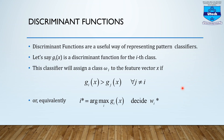Another function is the discriminant function. Discriminant functions are a useful way of representing pattern classifiers. Let's say g_i(x) is a discriminant function for the i-th class. This classifier will assign class W_i to a feature vector x if g_i(x) is greater than g_j(x) for all j not equal to i. Equivalently, this value is the argmax over i of g_i(x), where we decide the state of nature or class — that is the discriminant function.